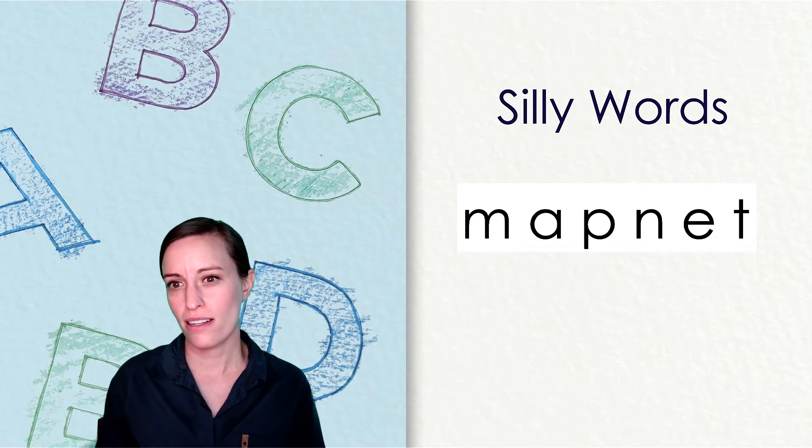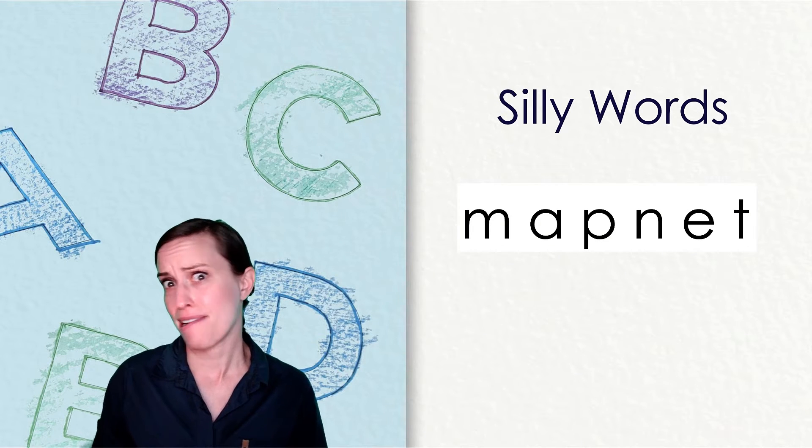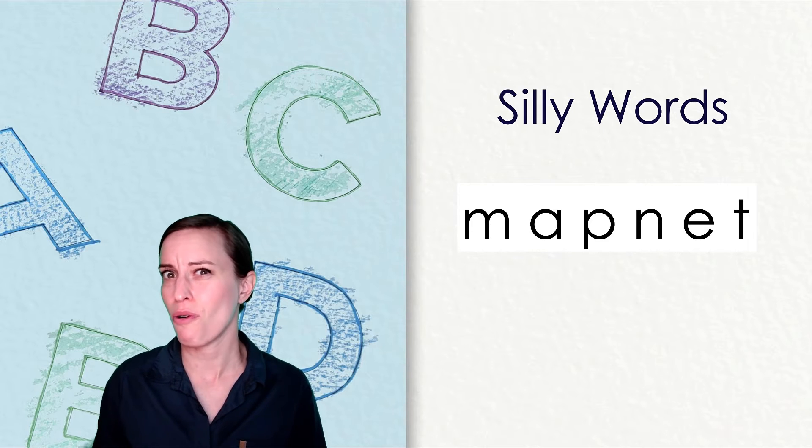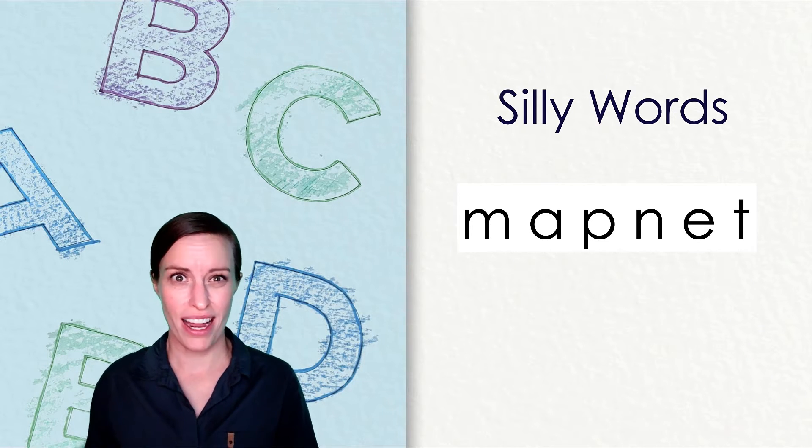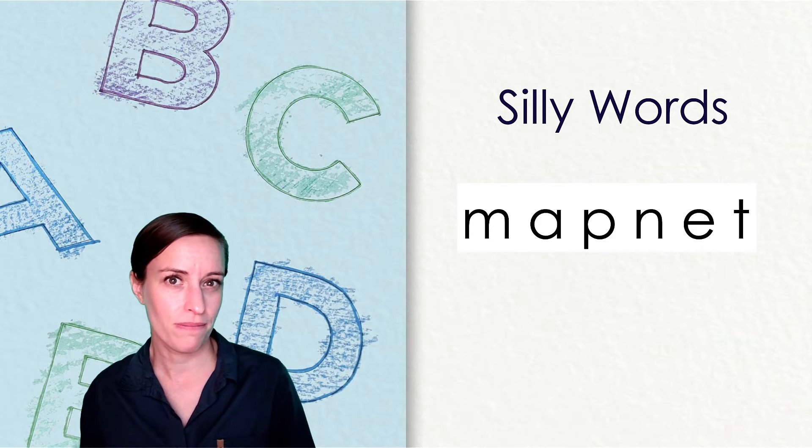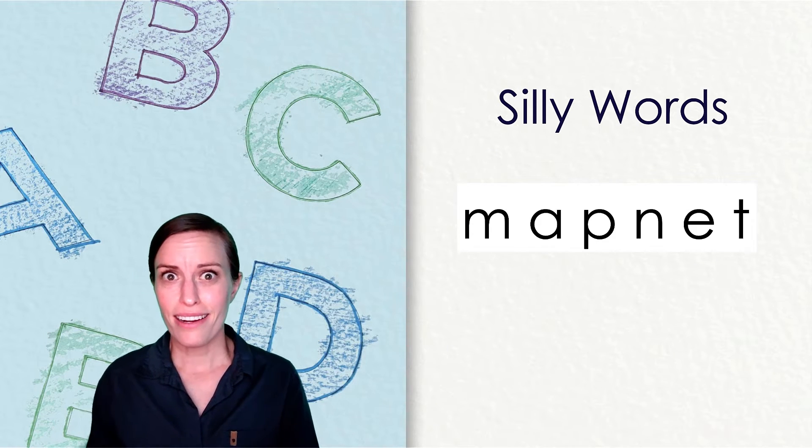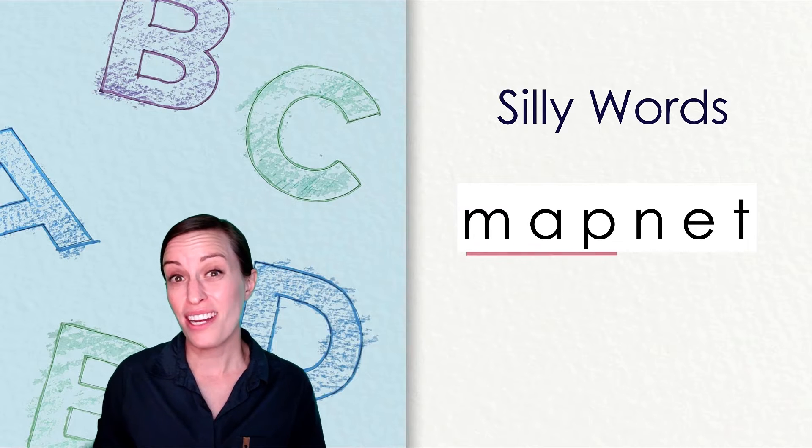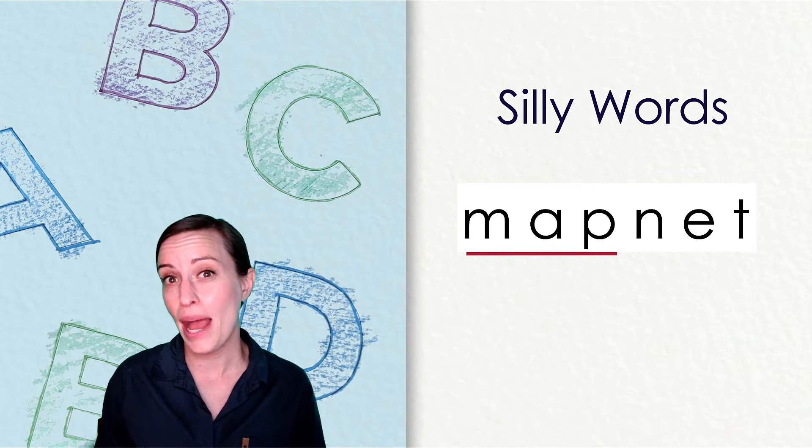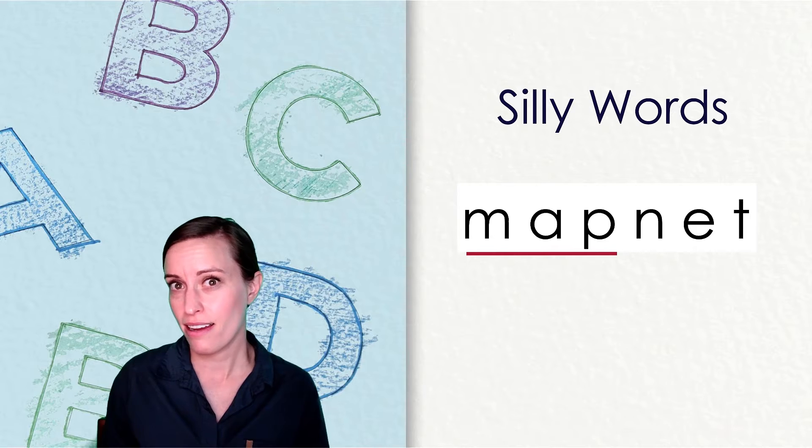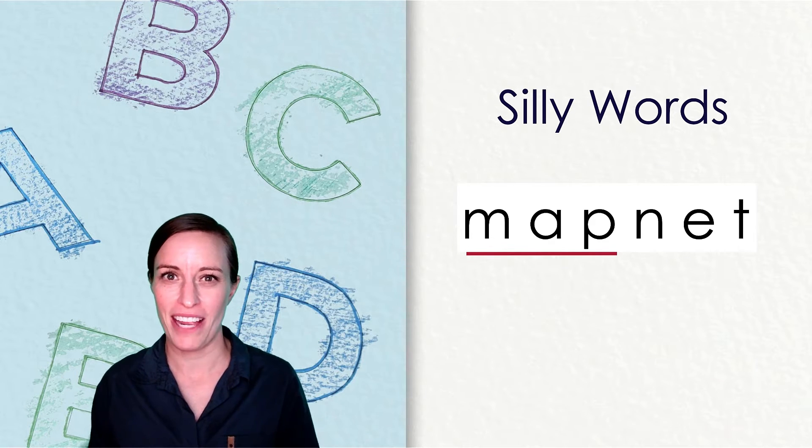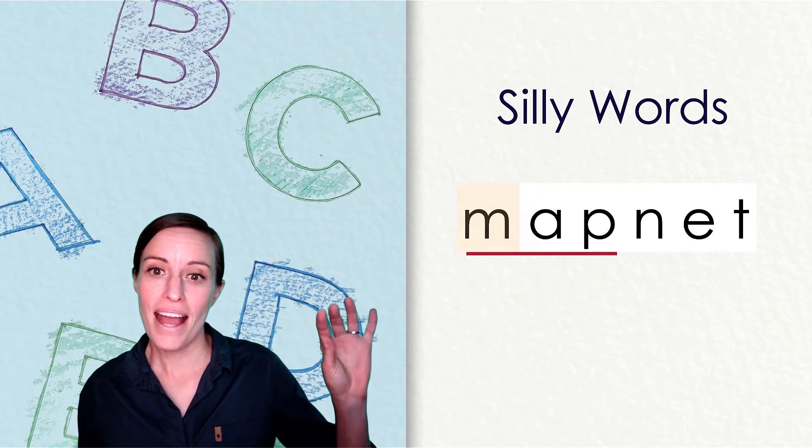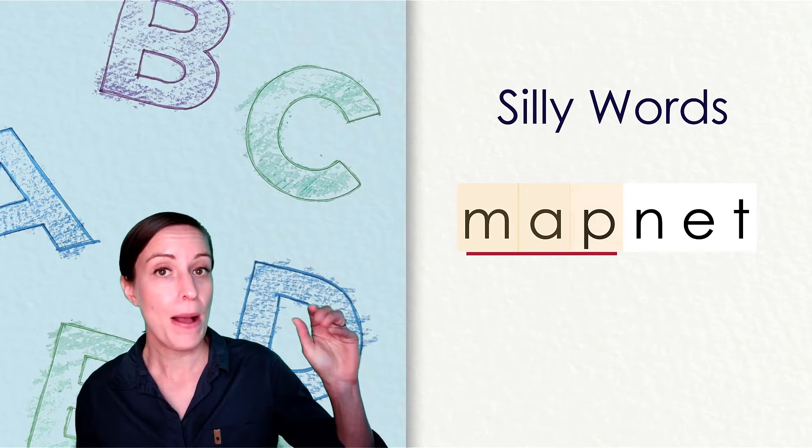Here is our next word. I don't know it either, but I know that I can look at each syllable at a time. Can you find the first vowel? That's right. It's an A. So I know the first part of the word is M-A-P. Let me tap out that first part. Why don't you join me? M-A-P. Map.